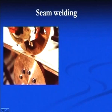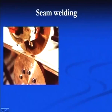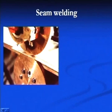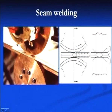The next is seam welding, which is also a resistance welding process in which electrodes in the form of rollers are used. Both electrodes or one of them may be in the form of rollers. The plates to be joined are passed through the rollers and electrical current is passed through these roller-shaped electrodes, which produces a number of nuggets in series.